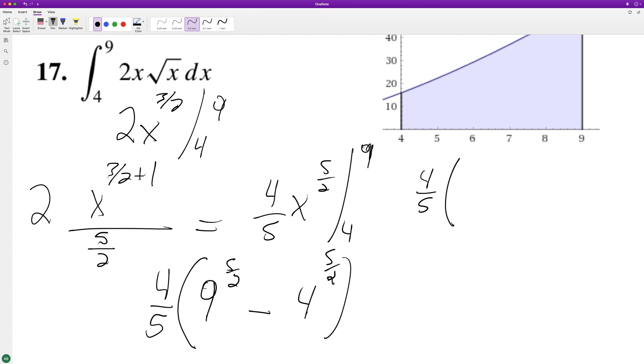Four fifths times, the top portion is nine to the one half, the bottom portion is three raised to the fifth. That's a large number. It's like 243 or something, minus 32.